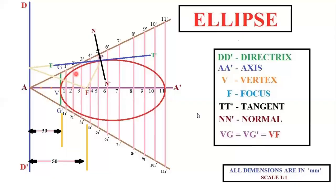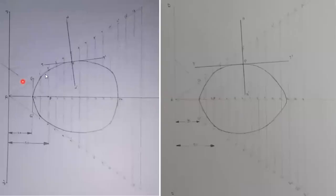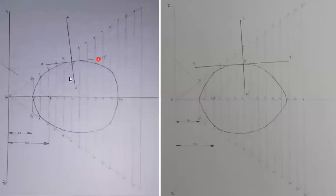The construction is now complete. After completing the entire diagram, your final diagram should show an oval elliptical shape. Only your curve, tangent, and normal should be drawn dark. All construction lines should remain very light. Arrowheads should be sharp-pointed, and dimension numbers should be written vertically at the middle of the dimension line.